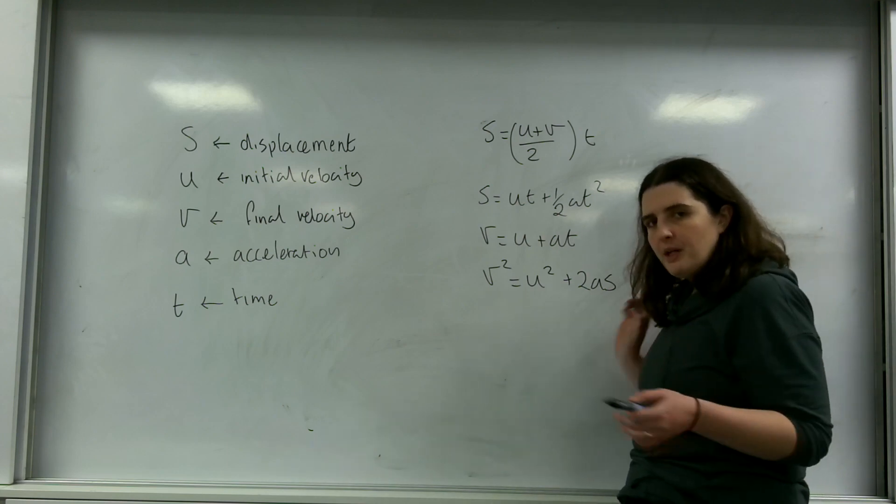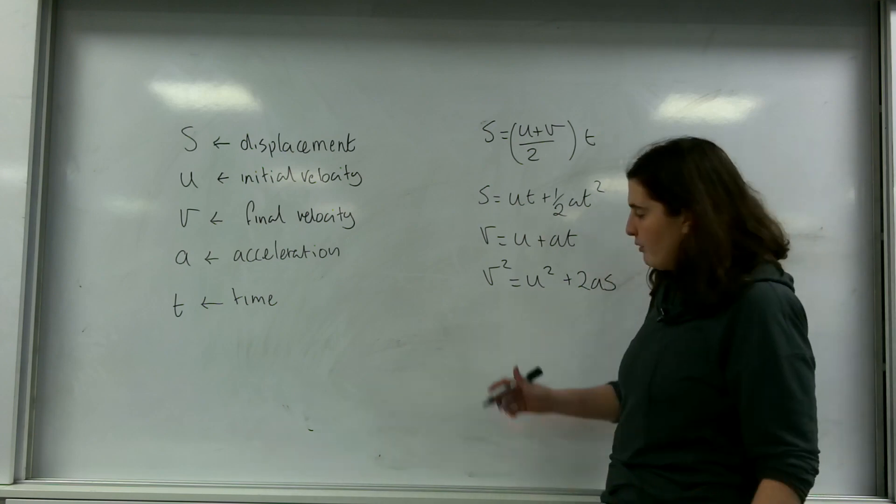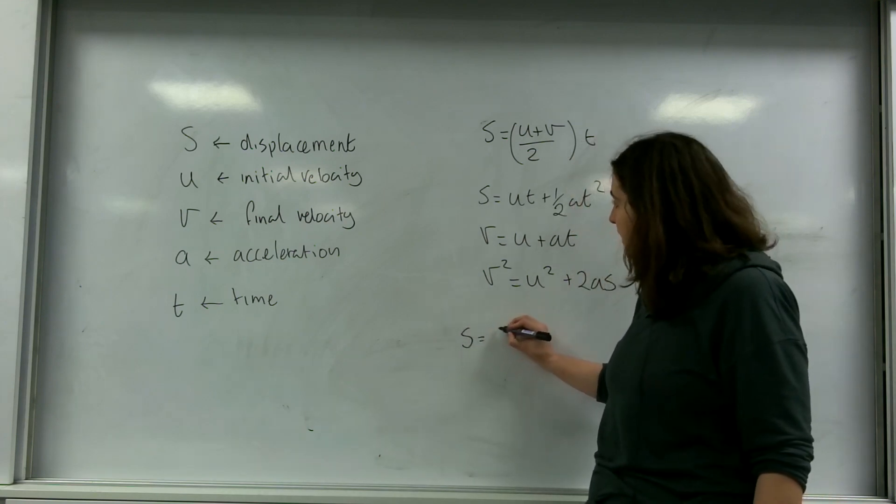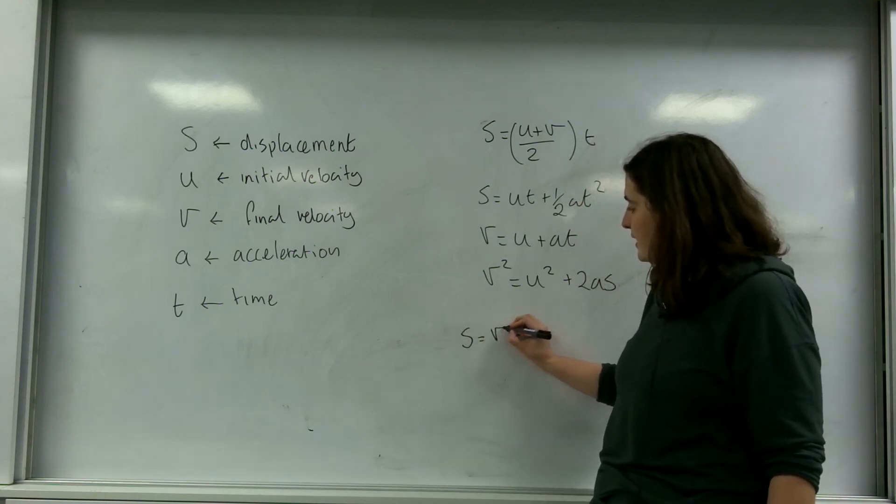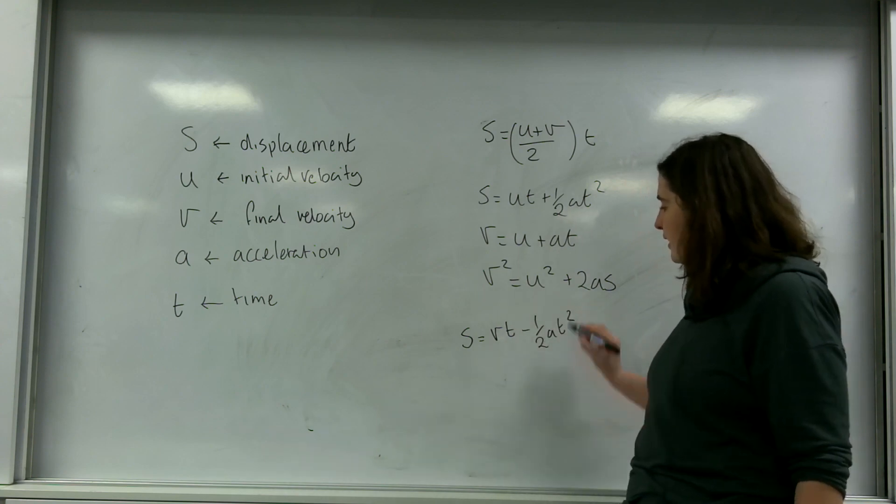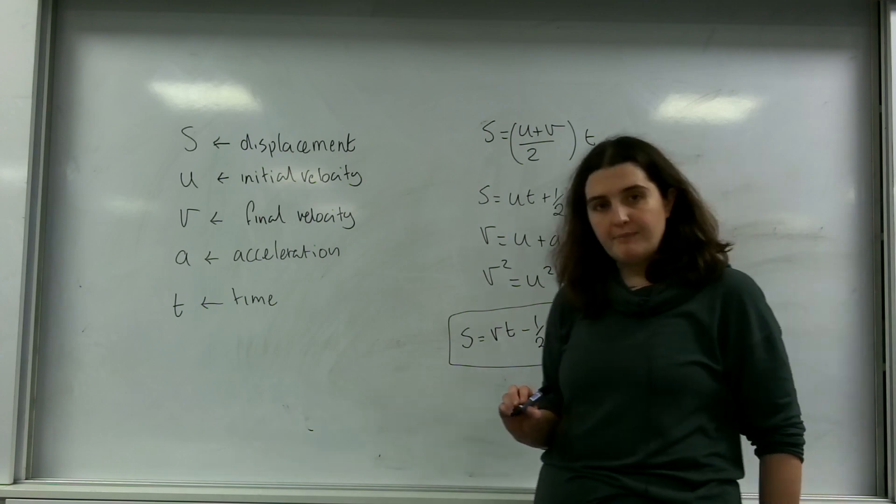There is another formula which some students might be aware of, and it sometimes appears in maths, but it's not on your data sheet at all. It's S equals VT minus a half AT squared.